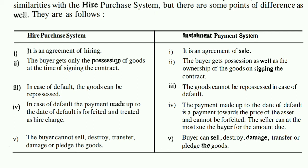In the Hire Purchase System, it is an agreement of hiring. You are hiring the goods — ownership is not in your name; you are just hiring and paying for that. In the Installment Payment System, it is an agreement of sale. You are buying the goods. In Hire Purchase you pay a hire charge, while in Installment Payment you pay the total price of the goods.